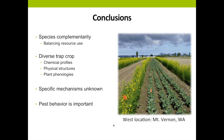In conclusion for these two experiments, species complementarity is often caused by balancing resource use among different resource extractors. In our experiment, our diverse trap crop represented different resources flea beetles can utilize to feed, develop, and reproduce — including different chemical profiles, different physical structures, and different phenologies, all of which have an important role in the herbivore-plant interaction. However, the specific mechanisms still remain unknown. We found more flea beetles in our diverse three-species trap crops, but also more flea beetles on the broccoli adjacent to them, so we need to take a closer look at pest behavior.